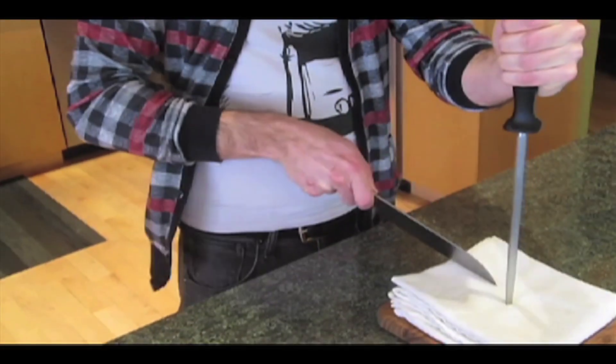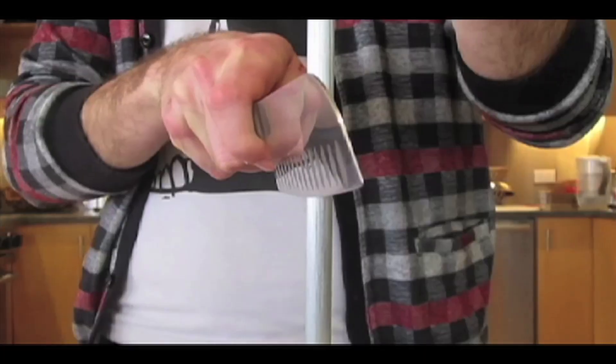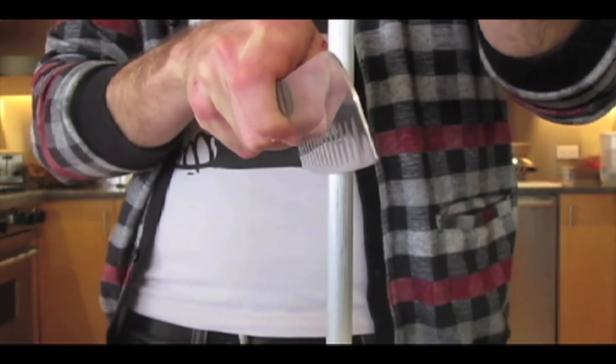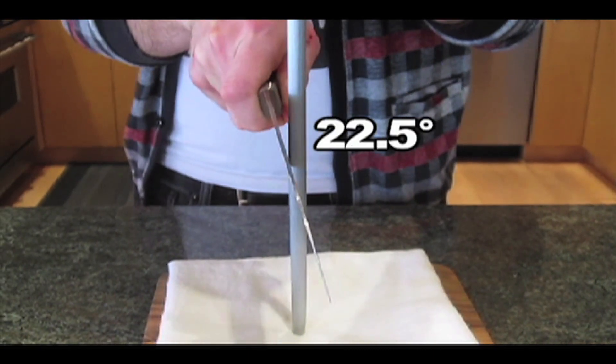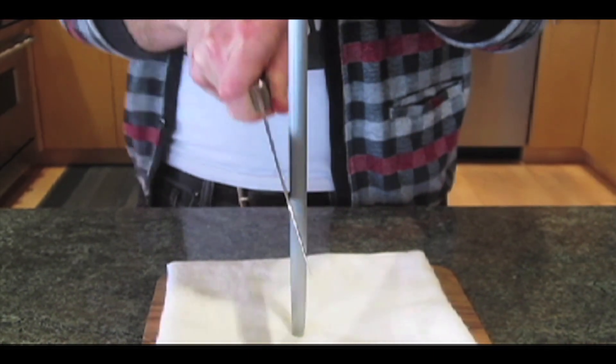Put the tip of the steel down on the countertop like this, then swipe in even strokes on either side. You're looking for somewhere between a 15 to 20 degree angle. How do you know what 20 is? Well, this is 90, half is 45, half is 22.5, and a little less is 20. There you have it.